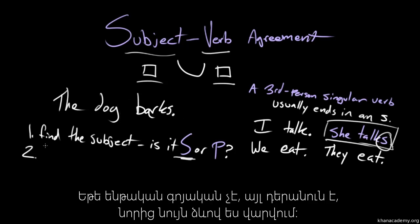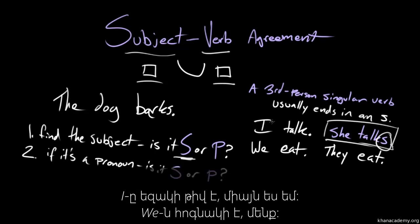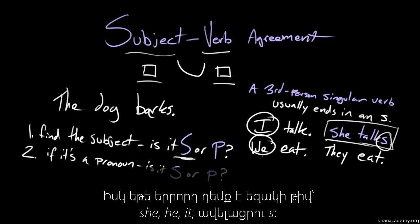So if the subject isn't a noun but a pronoun, same question. Is it singular or plural? I is singular. There's only one me. We is plural. There's many of us. And if it's singular, third person, so like she, he, it, end it in an S.